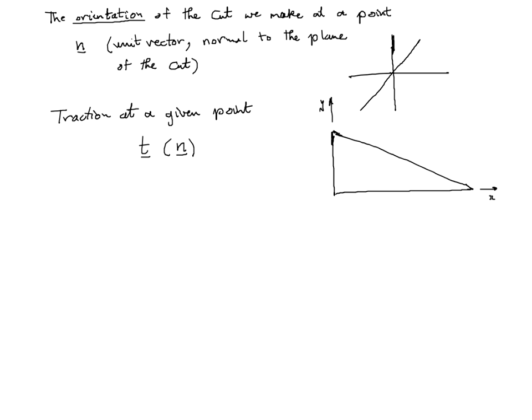Cauchy assumed a body under uniform traction, set up axes X and Y, and took a wedge-shaped part of the body with one side parallel to X, one side parallel to Y, and a generally inclined side in any direction. Since the orientation of the horizontal and vertical surfaces is fixed, the tractions T2 and T1 acting on them are fixed and don't depend on the orientation of the inclined surface. The traction T on the inclined surface depends on its orientation — that's the variable.